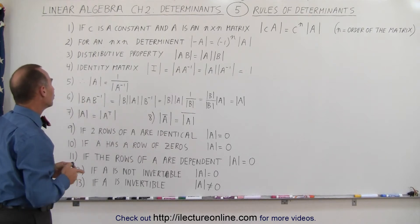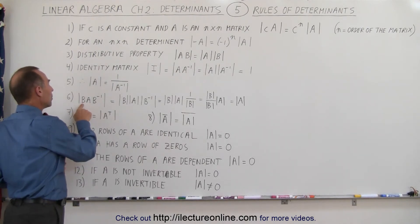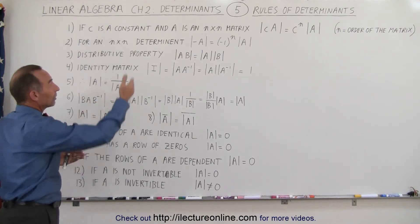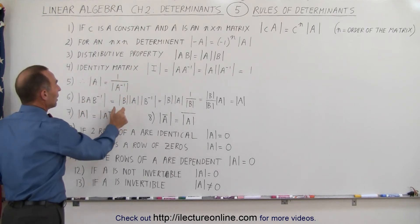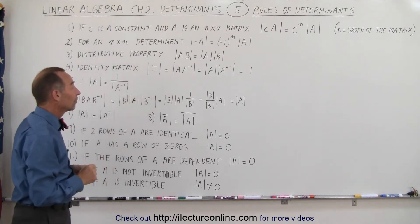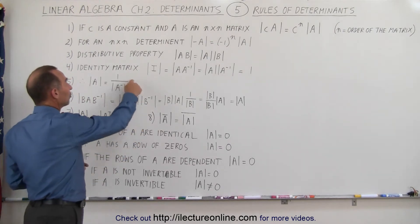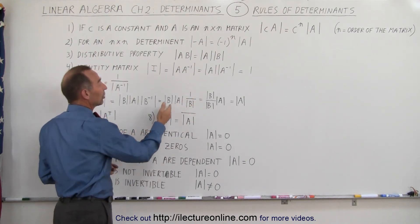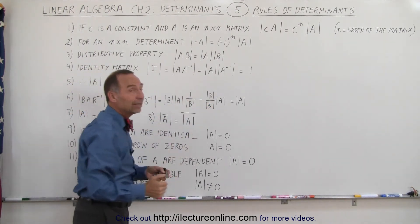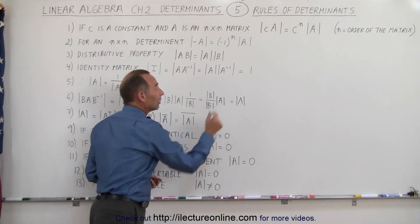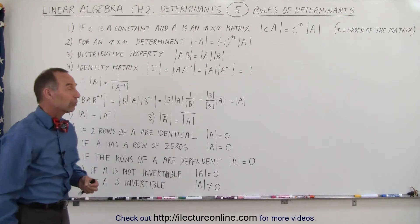Rule six: if we have a matrix B multiplied by matrix A and then multiplied by the inverse of matrix B, by the distributive property we can write it as the product of the determinants of each of those three matrices. The determinant of B times the determinant of the inverse of B equals one, so we simply get the determinant of matrix A.